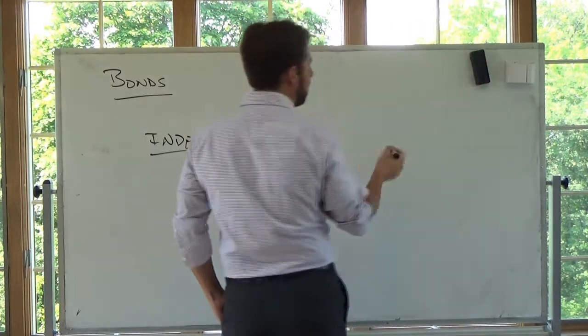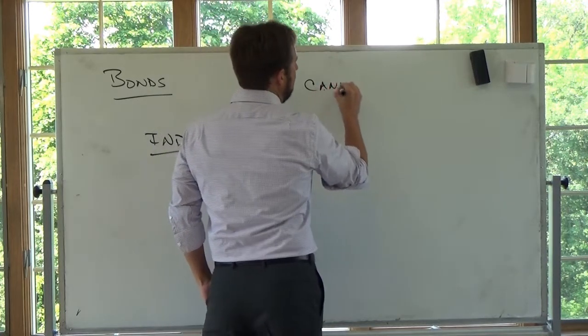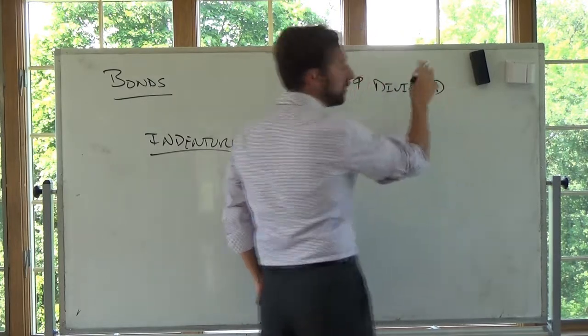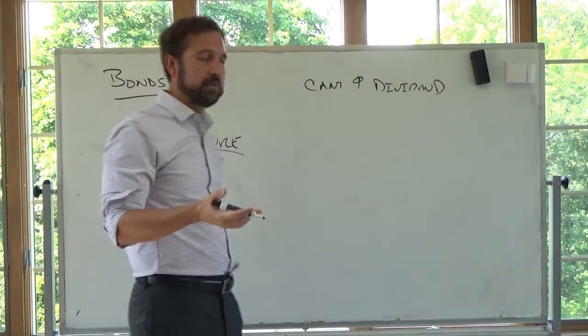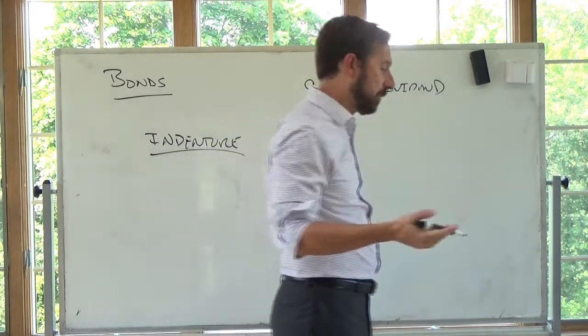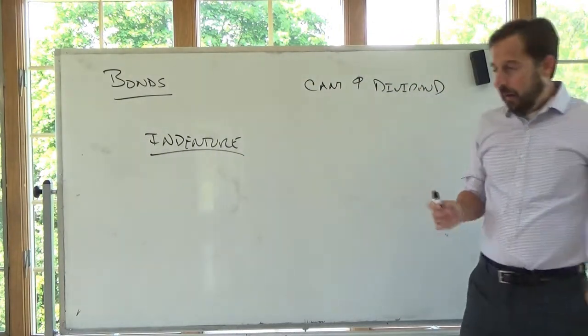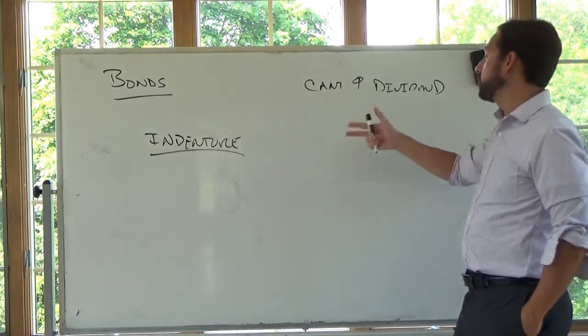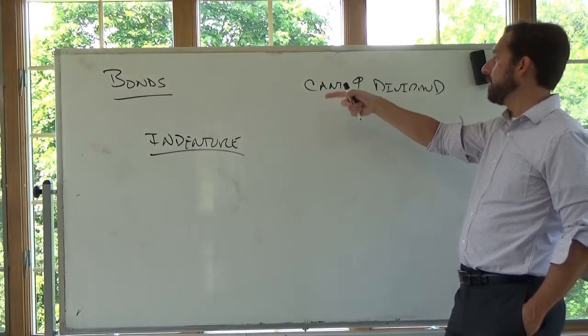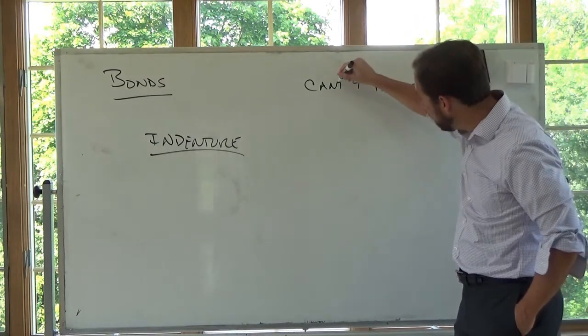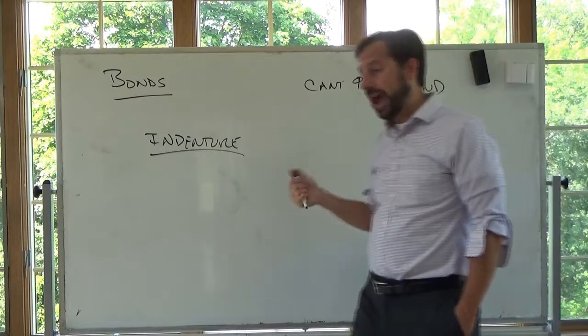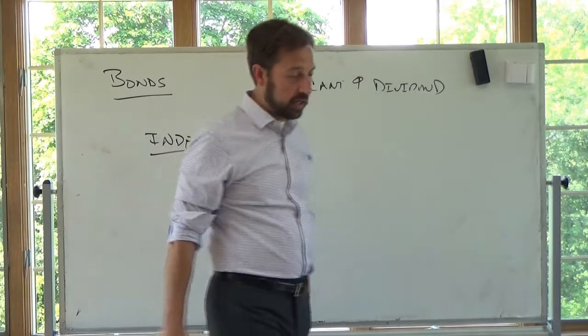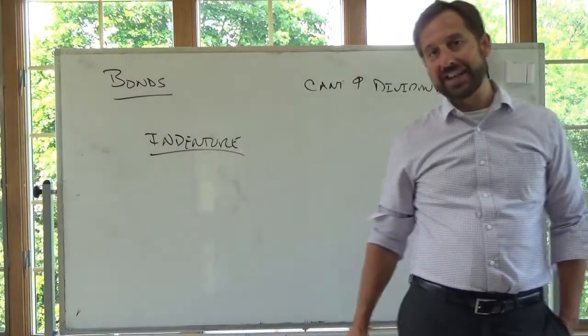In terms of protective covenants, what they'll say is you can't increase the dividend above a certain amount, so you can't increase the dividend by more than 5% per year or something like that. Another protective covenant is audited financial statements. So you have to file audited financial statements on a timely schedule.